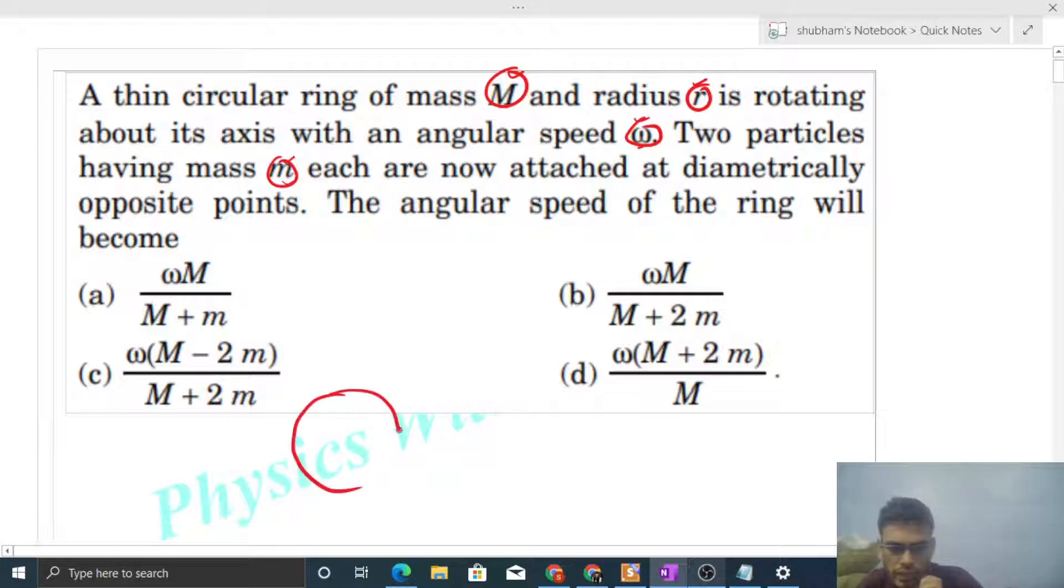So there is a ring of mass capital M and radius r. Initially it was rotating with angular speed omega. Now what happens is at diametrically opposite ends, two particles of mass small m are added. So what will be the final angular speed of this ring?